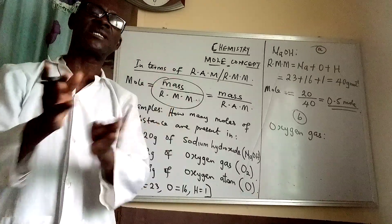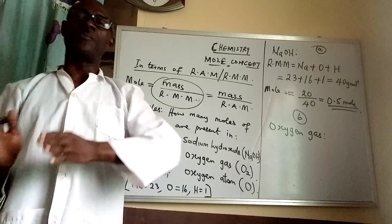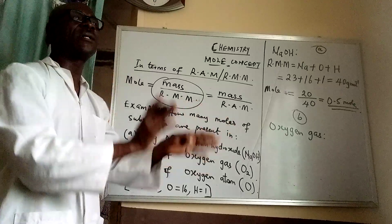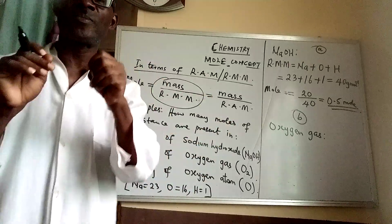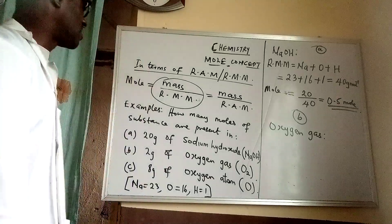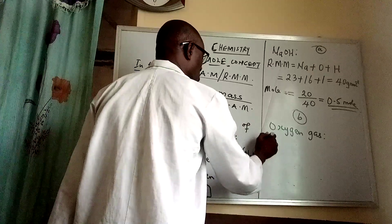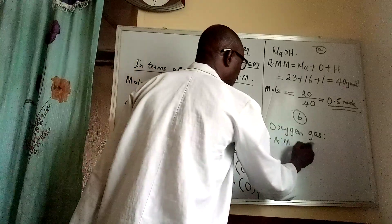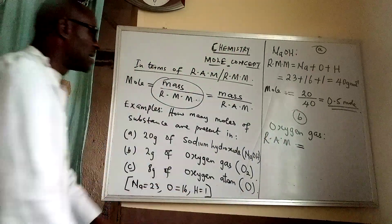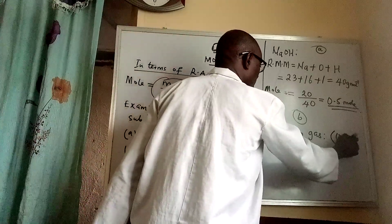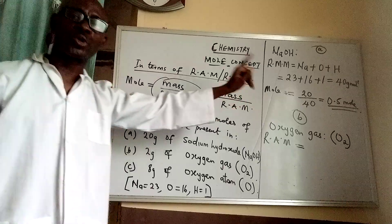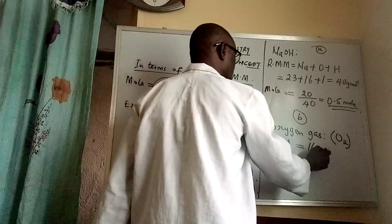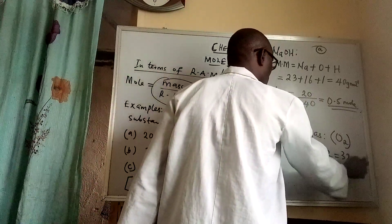Not all elements have two atoms in their molecule — only the diatomic elements. I will give you the list of diatomic elements shortly. Since oxygen gas is a single element, I will deal with the relative atomic mass of oxygen, which is 16. But because the oxygen gas molecule contains two atoms, I multiply: 16 times 2 gives 32 grams per mole.